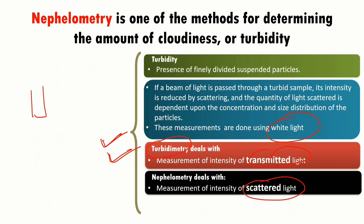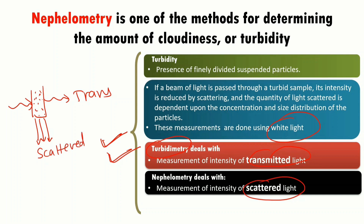The white light I am passing through the solution of suspended particles — this is the transmitted light, and this is the light which has been scattered. Therefore, the turbidimetry measurements are done at 180 degrees from the incident light beam.